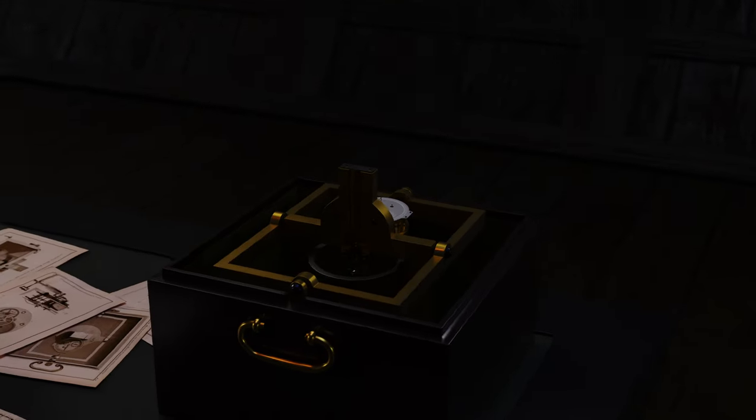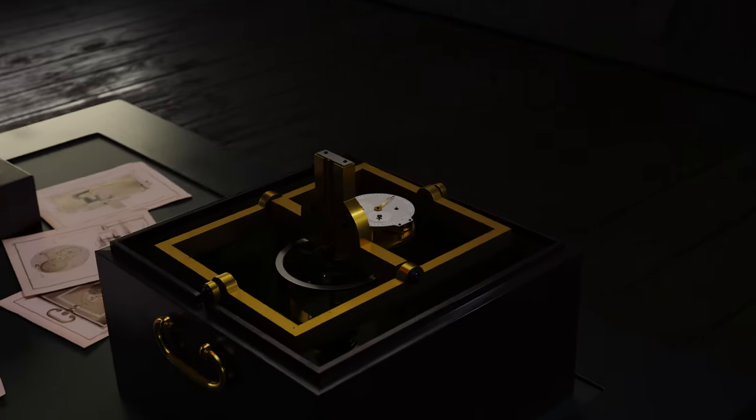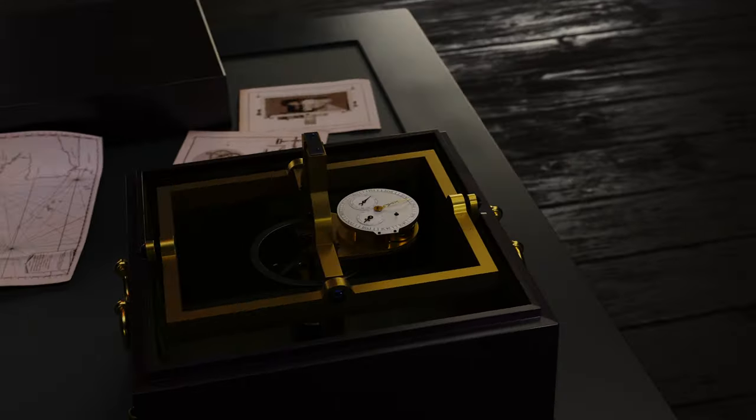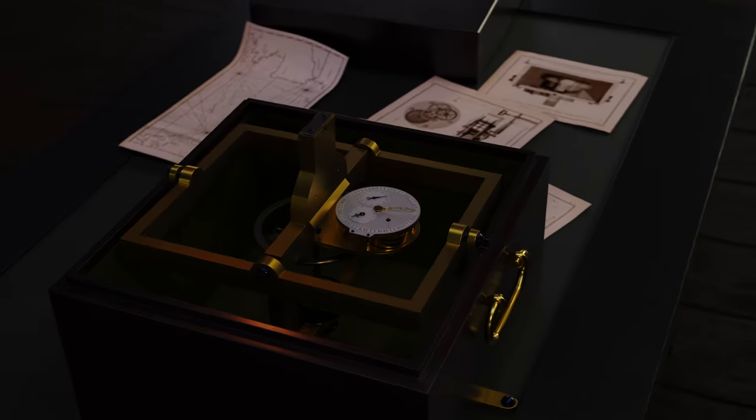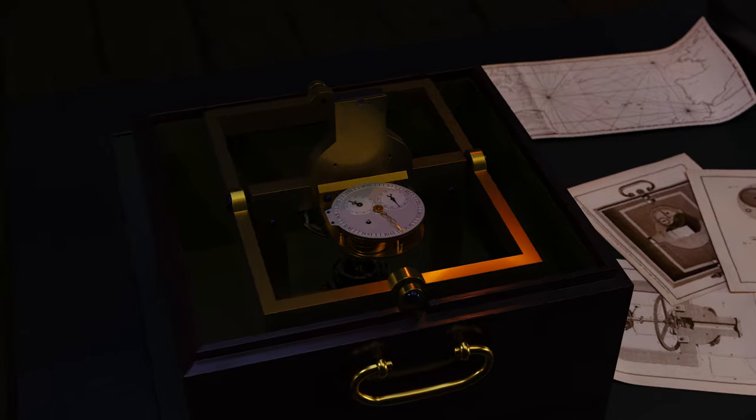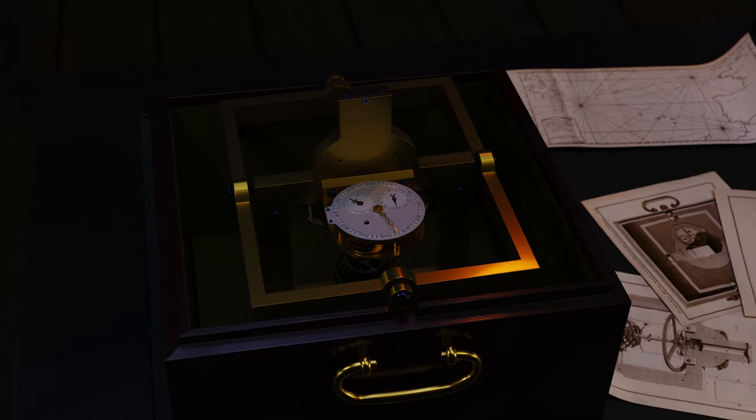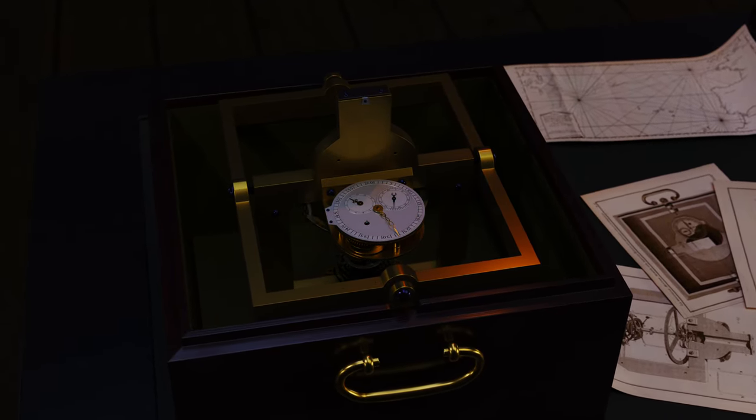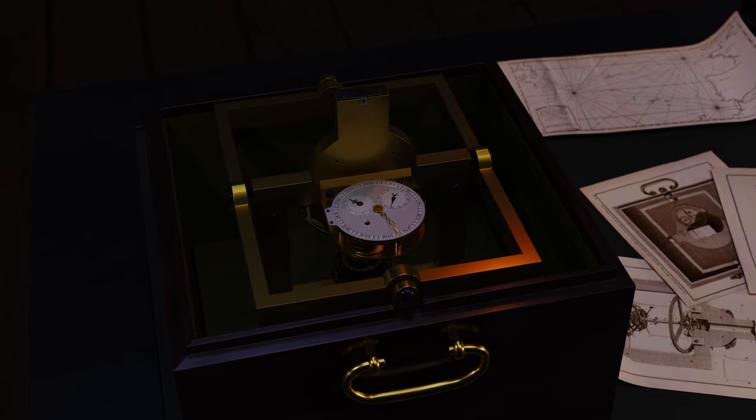The montresse from Pierre Leroy in 1766 is an exceptional timepiece. Marine chronometers are measuring tools designed to keep time on board of the ship as precisely as possible. This data was crucial to determine the longitude on board.